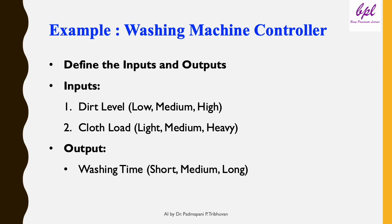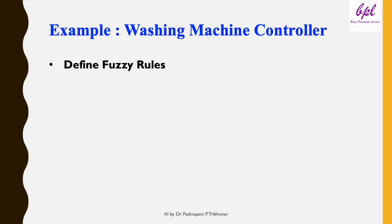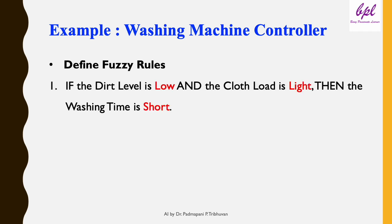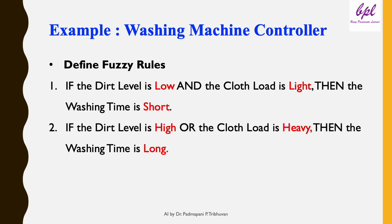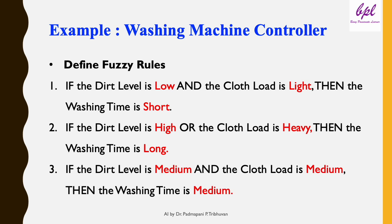Similarly, cloth load could be a mix of light and heavy. Instead of making hard decisions, fuzzy logic blends these degrees of membership to calculate the washing time. We define fuzzy rules to link inputs to the output: if dirt level is low and cloth load is light, then washing time is short; if dirt level is high or cloth load is heavy, then washing time is long; if dirt level is medium and cloth load is medium, then washing time is medium.